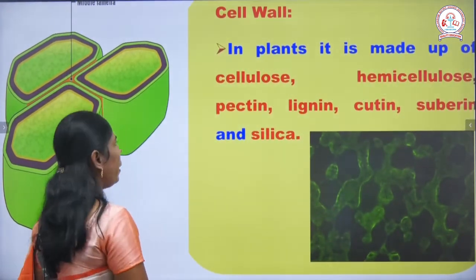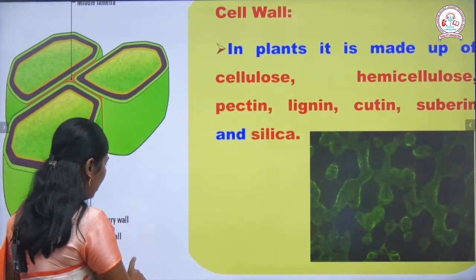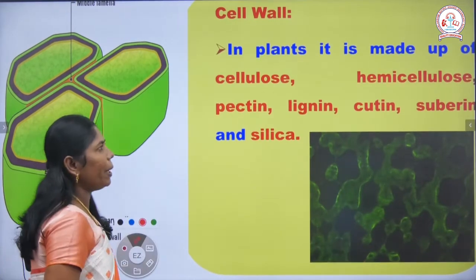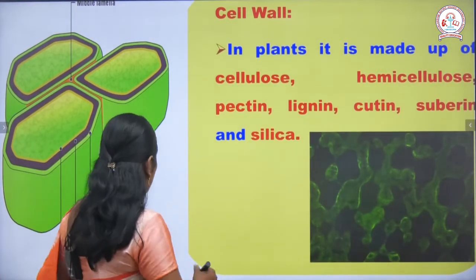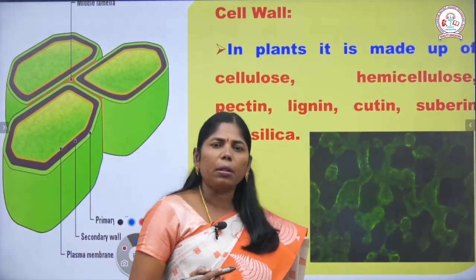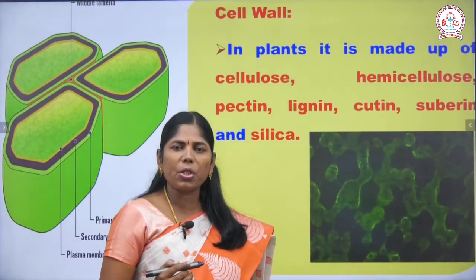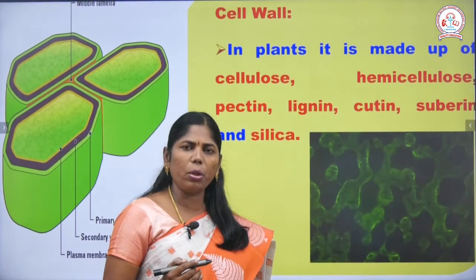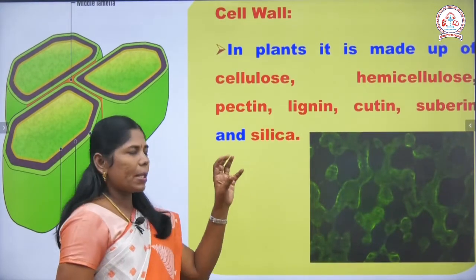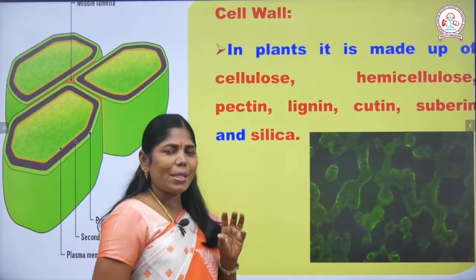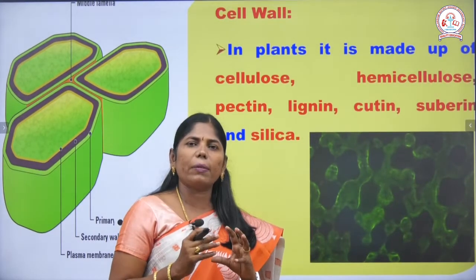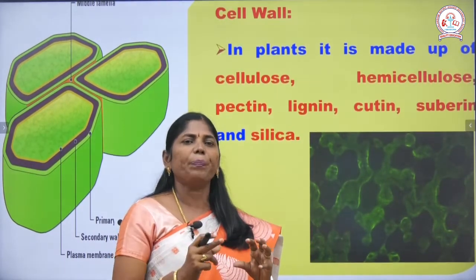Suberin is a cell wall material present in the endodermis. The endodermis is present next to the cortex in the root — in both dicot and monocot roots. The endodermis is made up of suberin and creates an impermeable condition, preventing solutions from passing through.